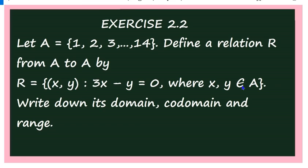Now to write its domain, co-domain and range, first you have to write R in the roster form. Here it is given in the set builder form: R = {(x,y) : 3x - y = 0}. That means you have to write all the elements of R. To write that, let us use this method.